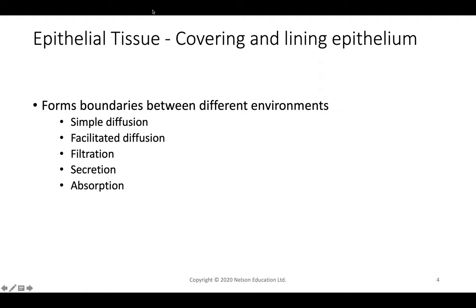Epithelial tissue covers and lines the epithelial layer, forming boundaries between different environments and allowing things to cross from one layer to the other. Molecules can migrate from one environment to the next through simple diffusion, facilitated diffusion, filtration, secretion, and absorption.